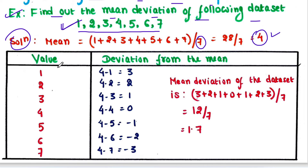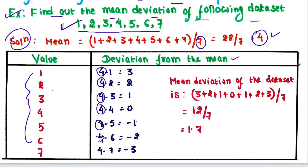Now we have written the values here. We will calculate the deviation from the mean. The mean is 4 in each case, and then we will calculate the deviation — 4 minus the exact value present in the data set — and we will get these deviation values.